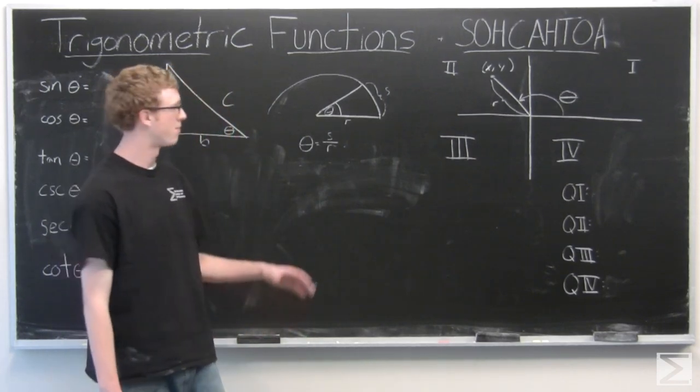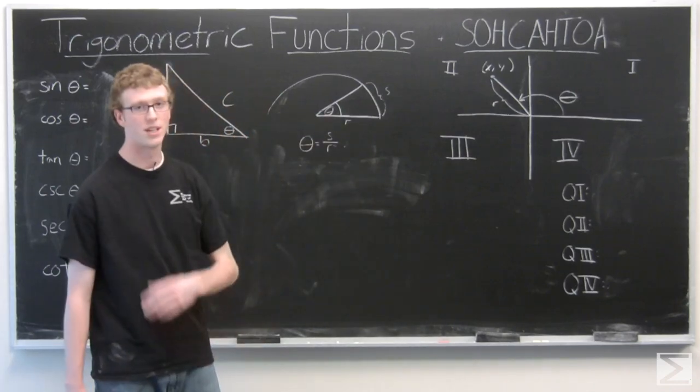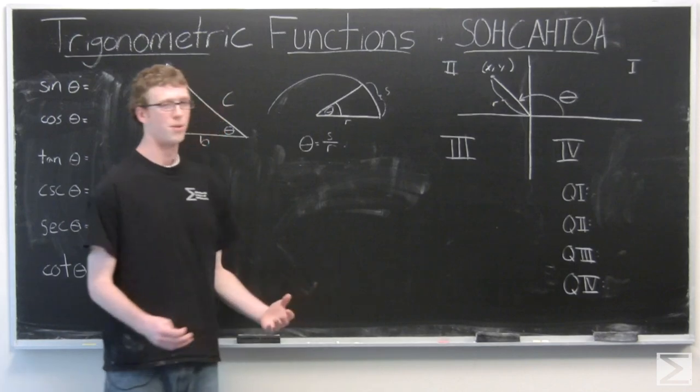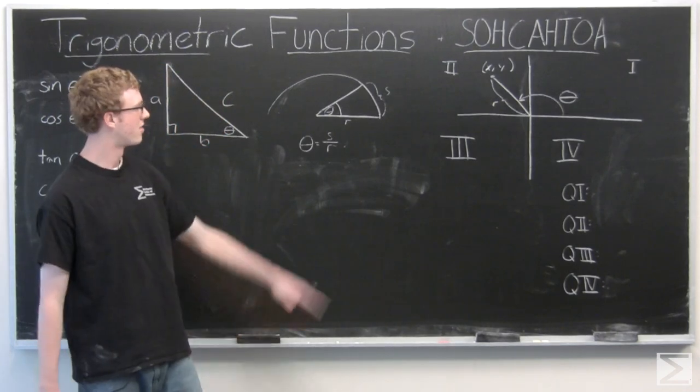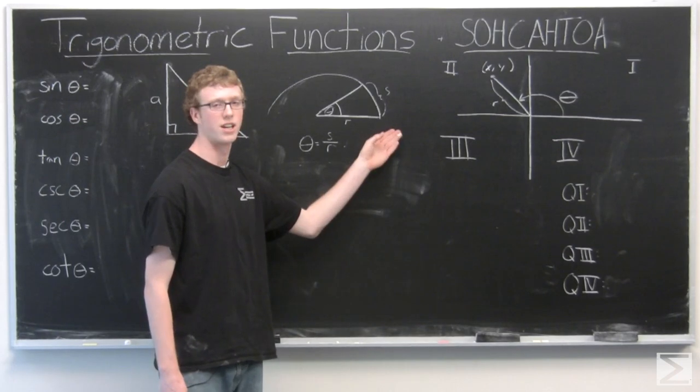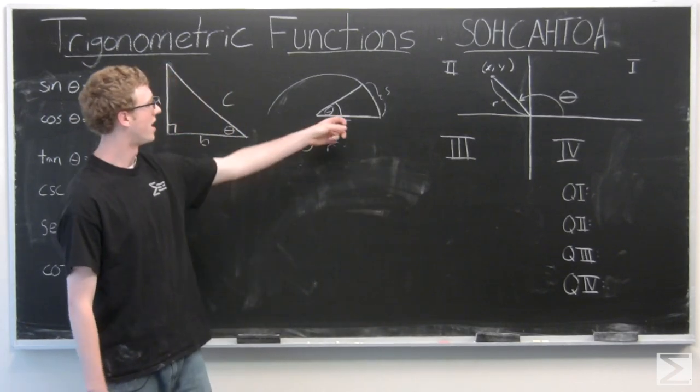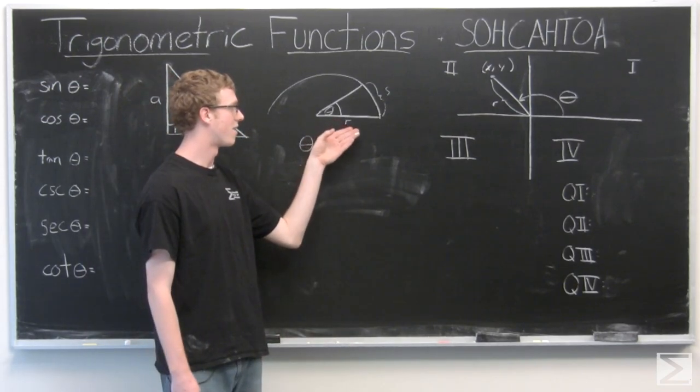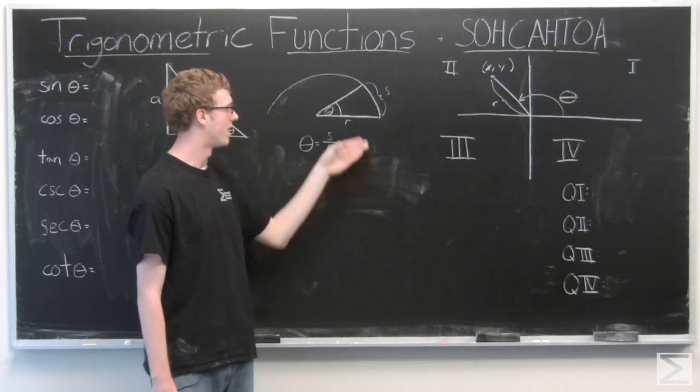Before we start, please ignore all this crazy writing on the board around me and consider this half circle. It's supposed to be a full circle, but we only have room for half circle. And so we have an angle in this half circle, theta, the arc length that theta cuts out, and r, the radius of the circle. And we define theta in relation to that arc length and that radius.